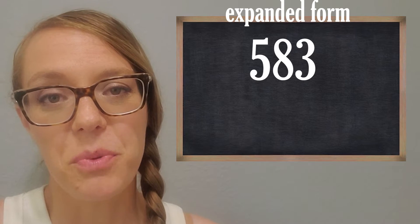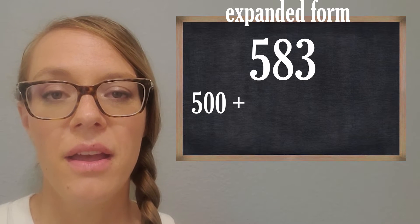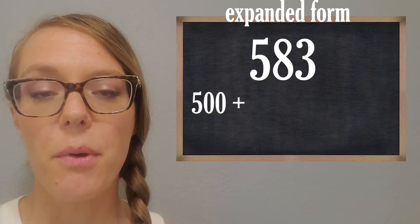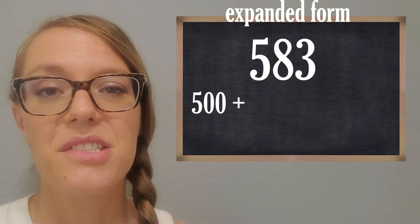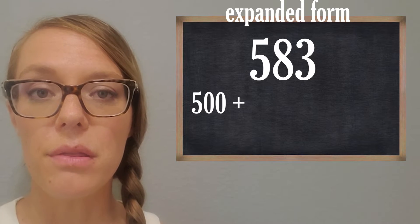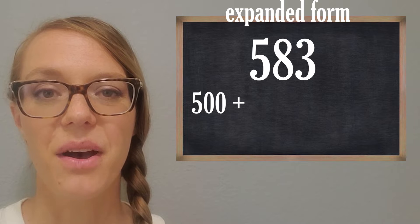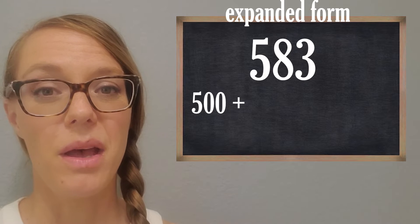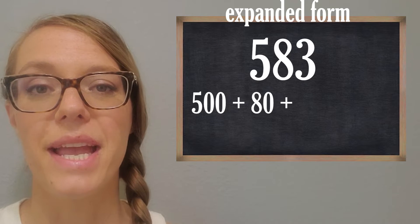It's in the hundreds place, so it's worth 500. We're going to write that down on our chalkboard and put a little plus sign, because we're showing that if we added up all these values we would get the original number, 583. Now what about the eight? It's in the tens place and there's eight of them — you could count up: 10, 20, 30, 40, 50, 60, 70, 80 — so it's worth 80.